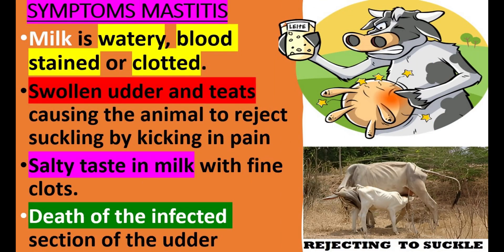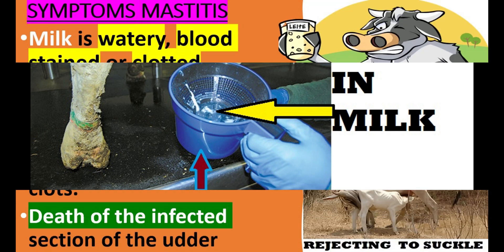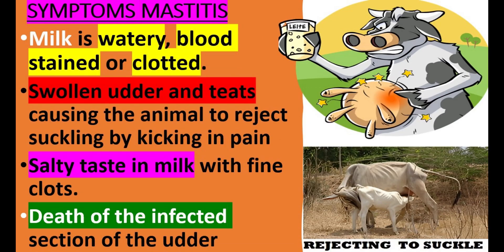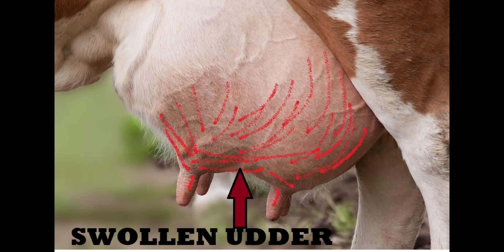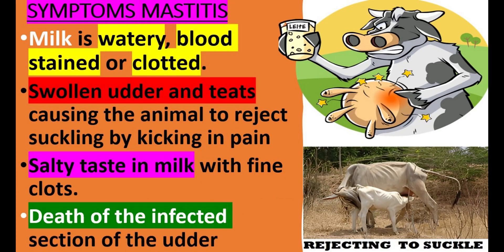Symptoms of Mastitis include watery milk that is blood-stained or clotted, swollen udder and teats causing the animal to reject suckling by kicking in pain, salty-tasting milk with fine clots, and death of the infected section of the udder.